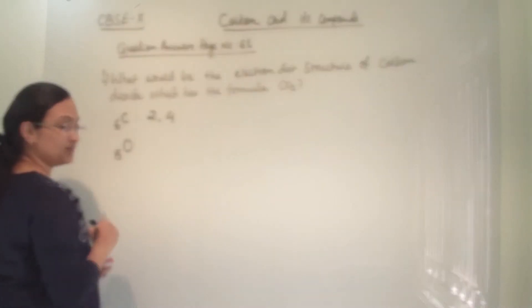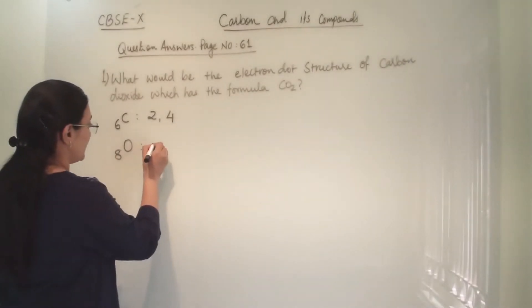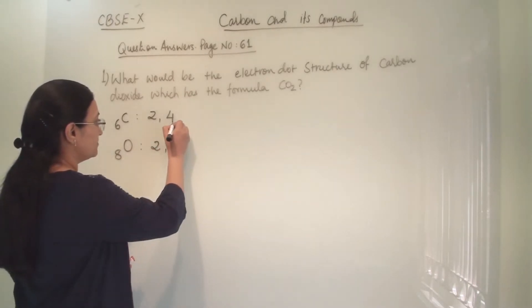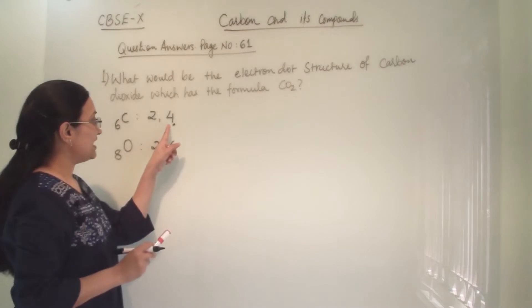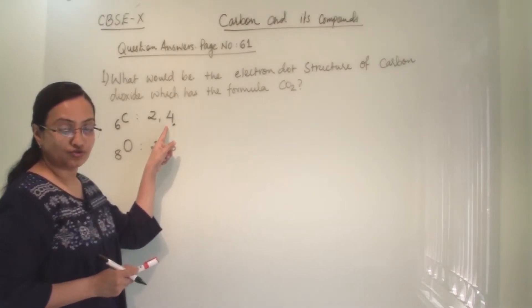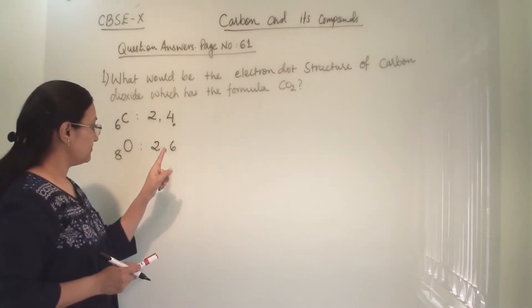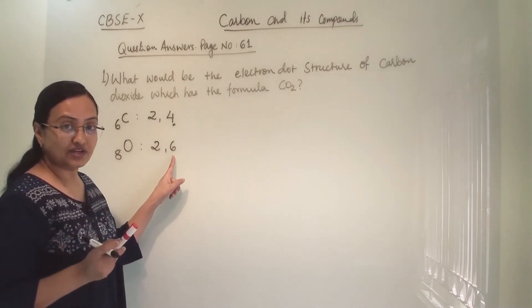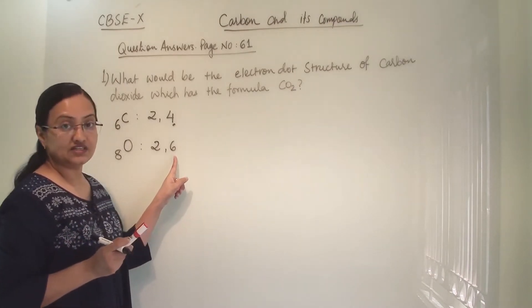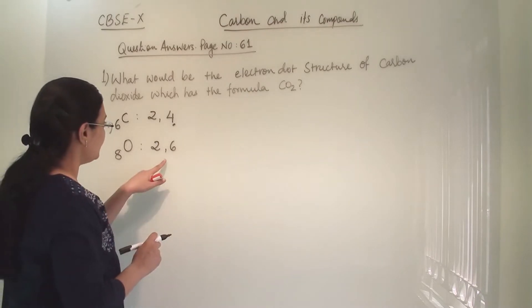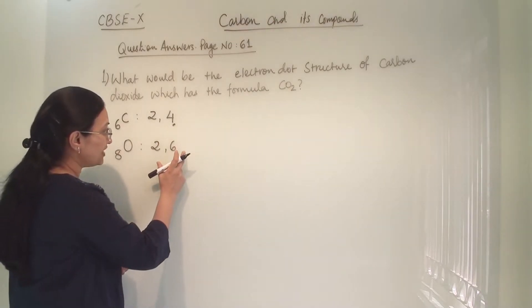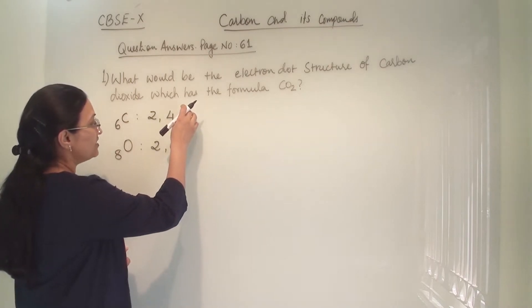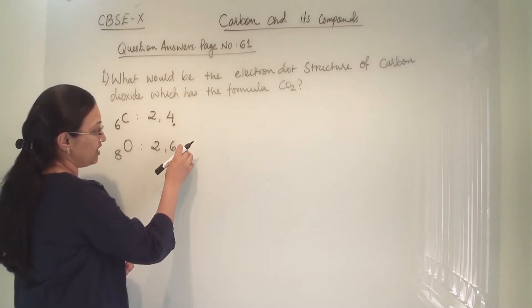Carbon's electronic configuration is 2, 4. Oxygen: its atomic number is 8 and electronic configuration is 2, 6. Here carbon is lacking 4 electrons to complete its L-shell. Oxygen is lacking 2 electrons to complete its L-shell. So we require 4 electrons from oxygen and 2 electrons from carbon.